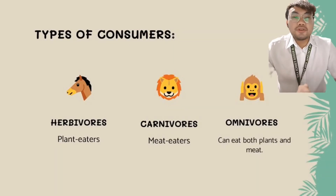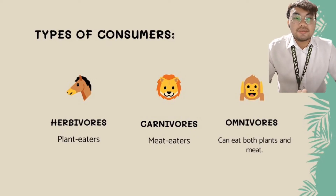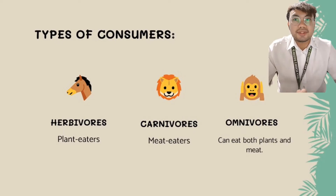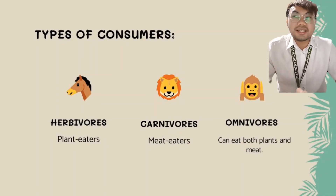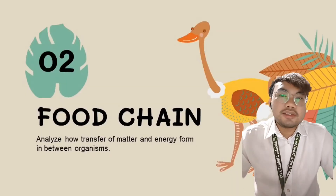We have three types of consumers. First are the herbivores, who only eat plants and always play as the primary consumer. Secondly, we have the carnivores, which are the meat eaters, and they are placed as secondary to tertiary consumers. And omnivores, who can eat both plants and animals, can be placed as primary, secondary, or tertiary consumers.